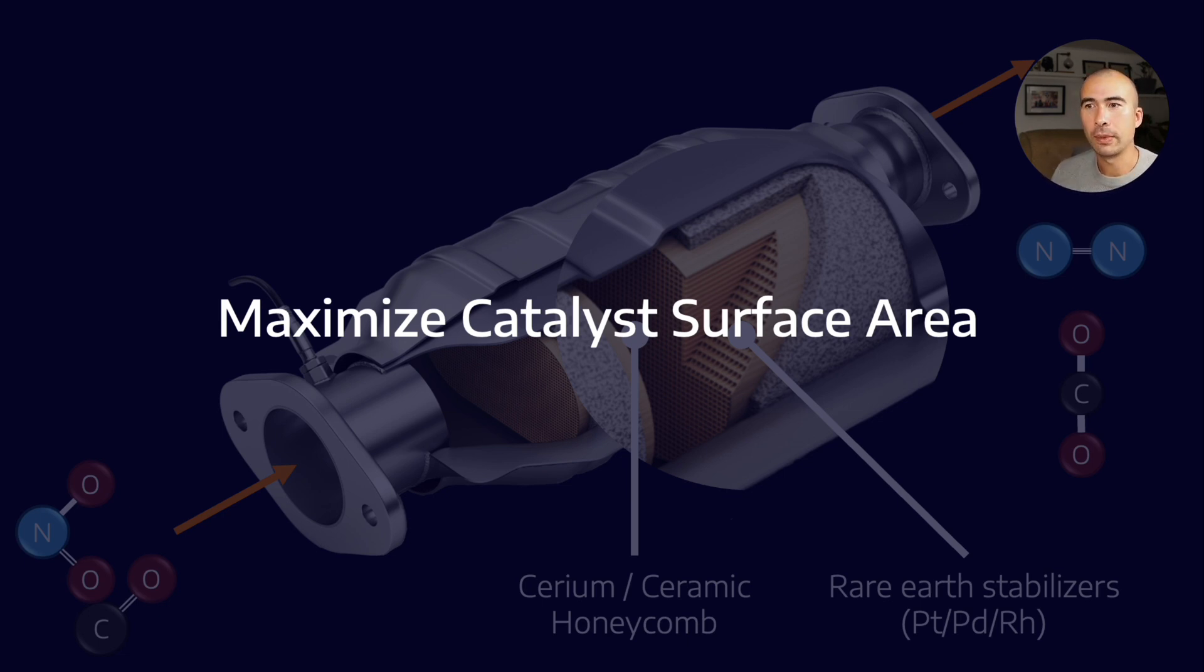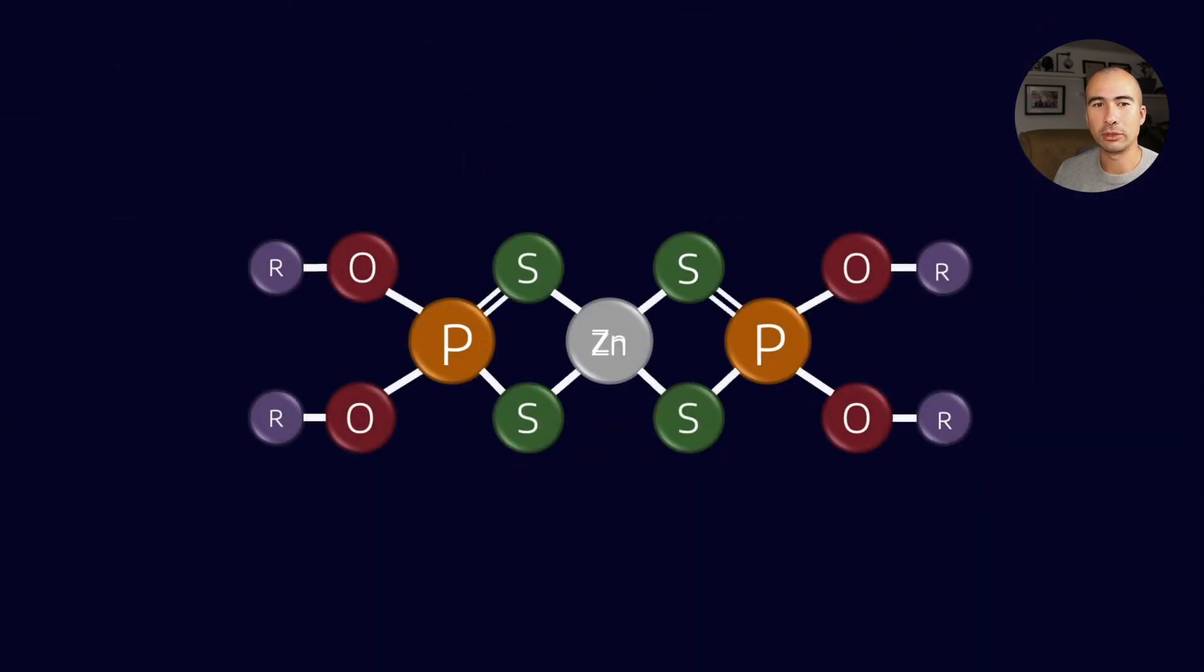Now, famously, we have a problem when it comes to ZDDP. And the reason for this is predominantly got to do with both the sulfur and the phosphorus in the ZDDP molecule. What these do is they're designed to be surface active. The whole point of ZDDP is it's supposed to bond to metal surfaces where it forms a polyphosphate film that is sacrificial.